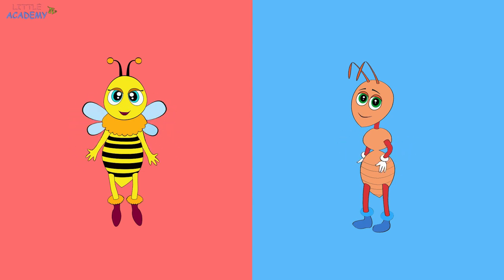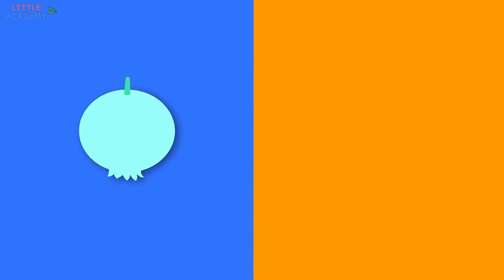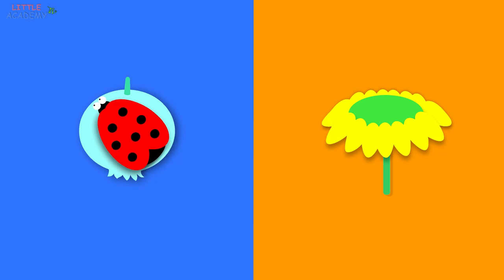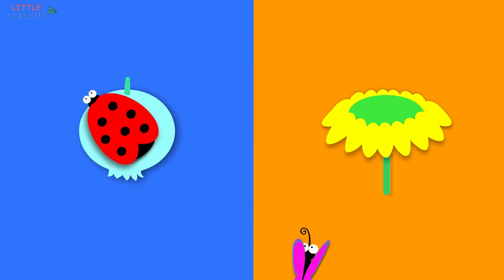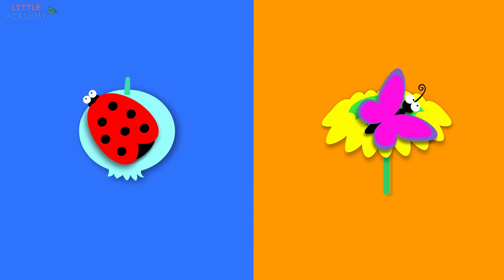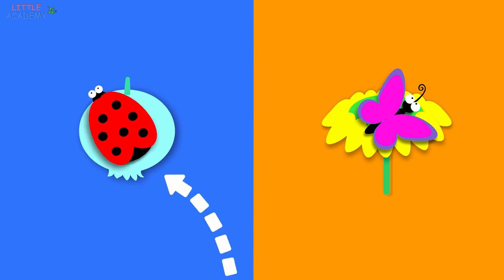And now let's do it again. The color blue is on the left. The color orange is on the right. The berry is on the left. The flower is on the right. The ladybug is crawling to the left. The butterfly is flying to the right. This is the left side. And this is the right side.